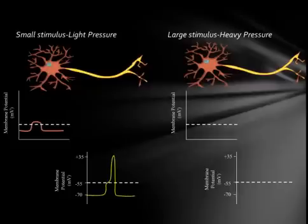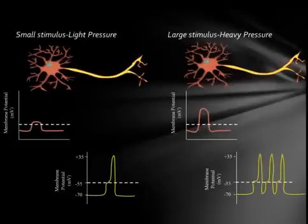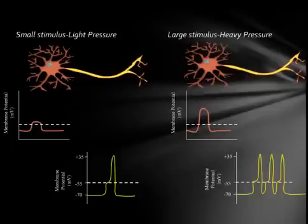If the skin is touched with a greater pressure, a large change in the membrane potential would occur. This would result in a higher frequency of action potentials in the neuronal axon. Once the receptors detect a signal, they must be able to communicate via action potentials with downstream control centers and effectors in order to maintain homeostasis.